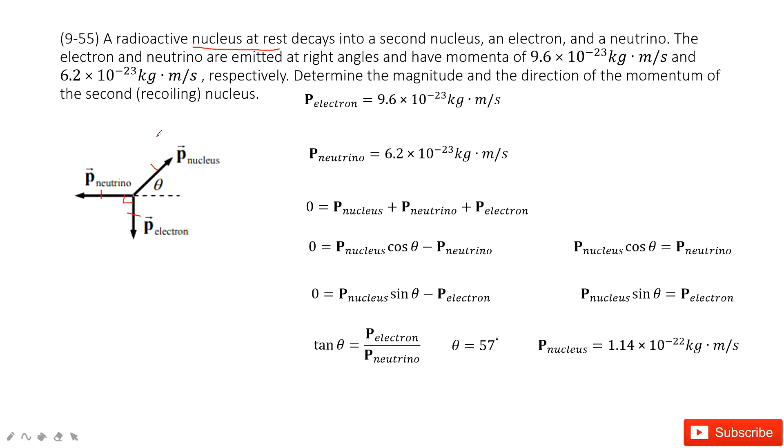Now we need to determine the magnitude and direction of the nucleus. So this one is unknown, and this angle theta is unknown. We need to find it.